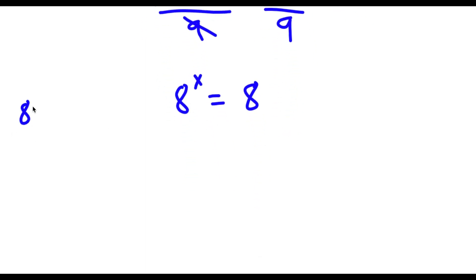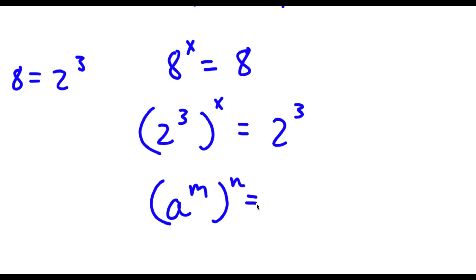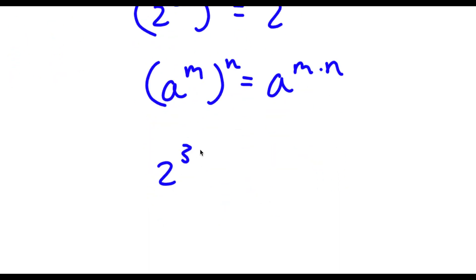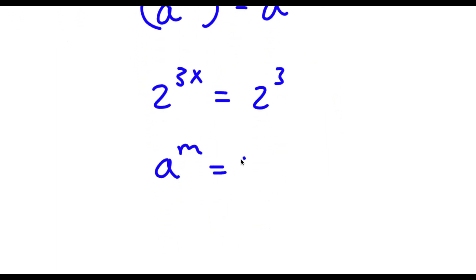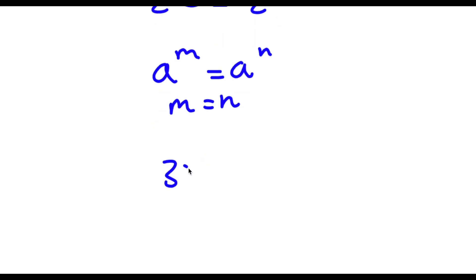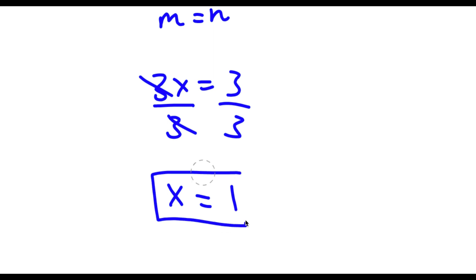Now 8 here is the same thing as 2 to the power of 3. So if I replace 8 with 2 to the power of 3, I get 2 to the power of 3 to the power of x is equal to 2 to the power of 3. Now if I have something in the form a to the power of m to the power of n, this is equal to a to the power of m times n. So 2 to the power of 3 to the power of x equals 2 to the power of 3x, which is equal to 2 to the power of 3. Since the bases are the same, 3x equals 3, so dividing both sides by 3 gives x equals 1.